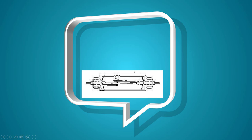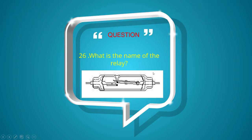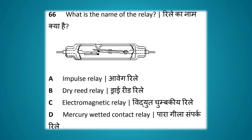What is the name of the relay shown? Options: impulse relay, dry reed relay, electromagnetic relay, mercury wetted contact relay. The answer is dry reed relay.